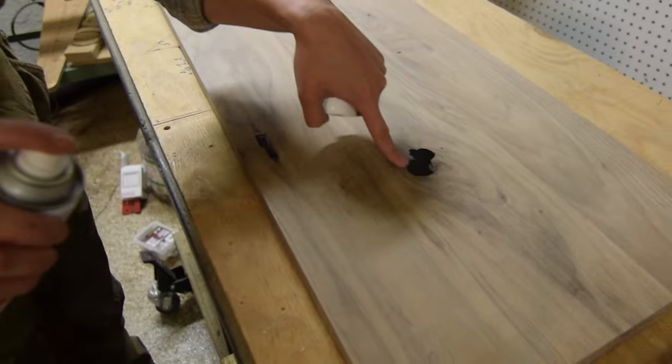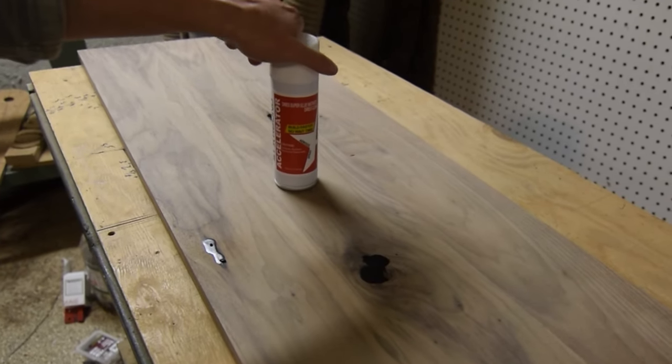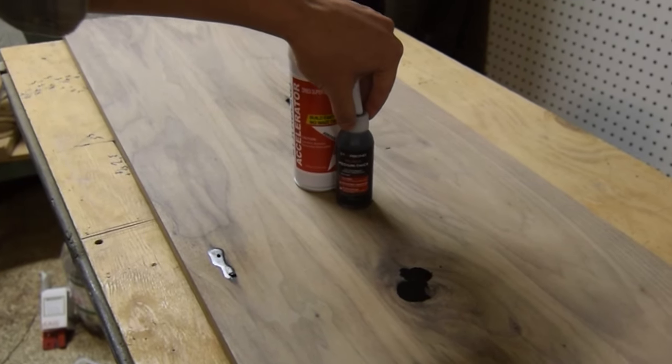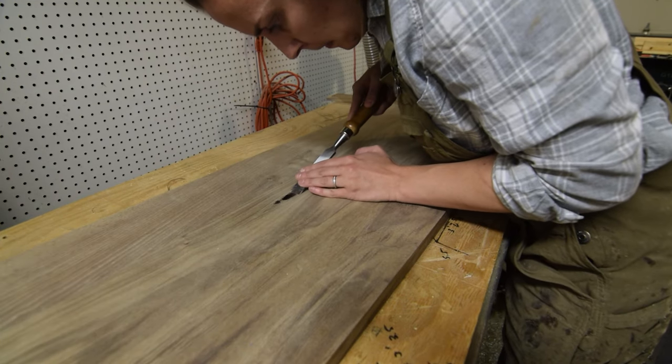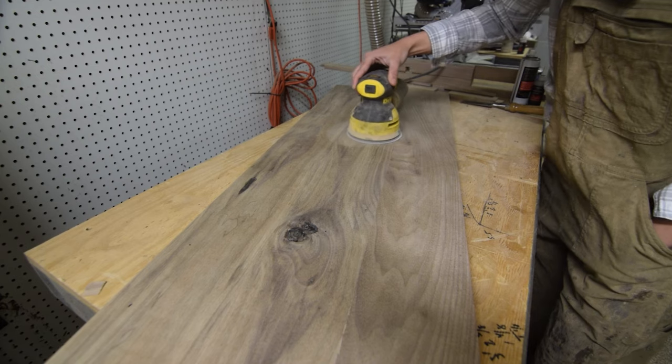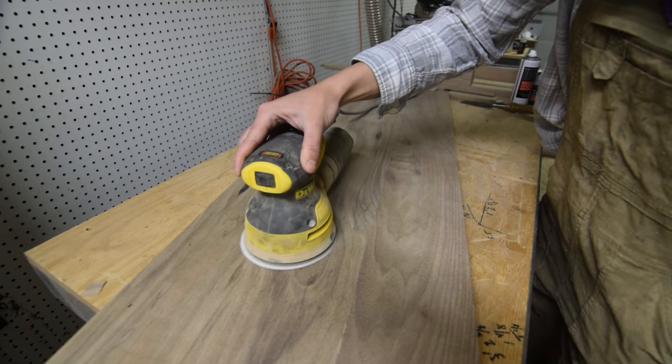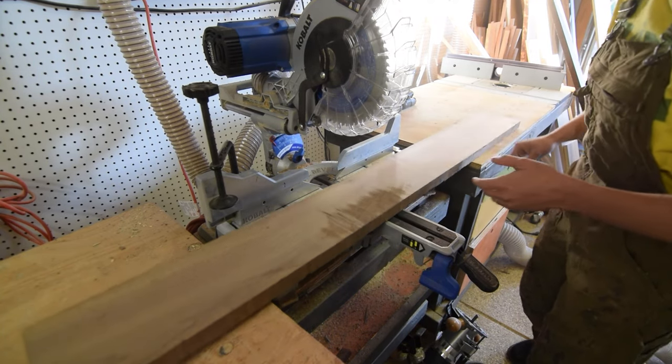If you have a project in need of some super glue and want to help support the channel at the same time, use the link in the description below to check out Starbond's super glue collection. Once the cure set, I tidied up the knots and gave the bench top a finishing level sand down, then turned towards the bench legs.